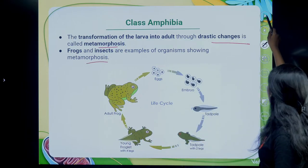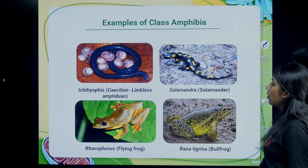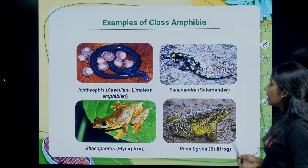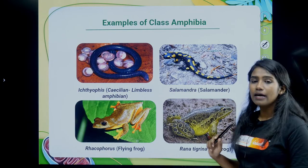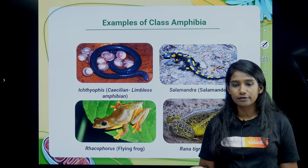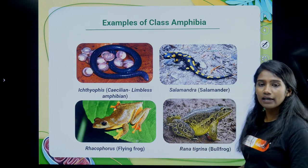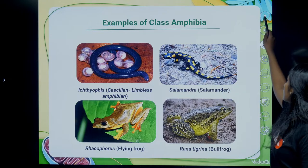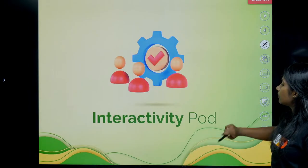Amphibians have eyelids. Respiration is by gills, lungs, and skin — in the larval stage it is through gills; in adults it is through lungs. The heart is three-chambered — two atria and one ventricle — whereas human beings have four-chambered heart. The transformation of larvae into adult is through metamorphosis. Frogs and insects are examples showing metamorphosis. Examples of class Amphibia include frogs, toads, and salamanders.